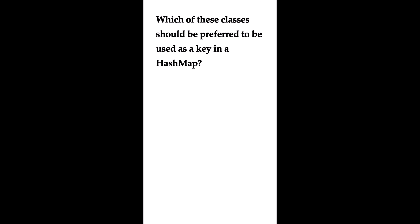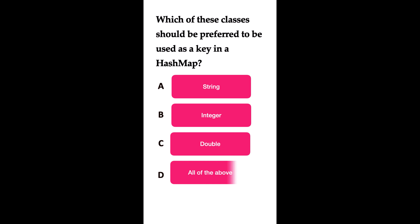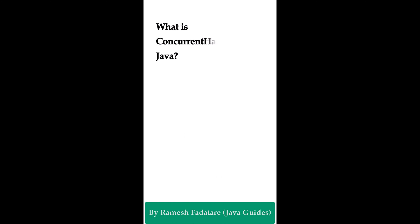Which of these classes should be preferred as a key in a HashMap? Option A: String. Option B: Integer. Option C: Double. Option D: all of the above. The correct answer is all of the above. String, Integer, and Double all override the hashCode() and equals() methods, making them suitable as keys in a HashMap. Any class that correctly overrides equals() and hashCode() can be used as a key. It is essential that the key remains immutable — String, Integer, and Double are all immutable, making them good choices.